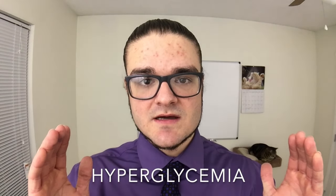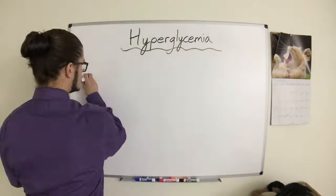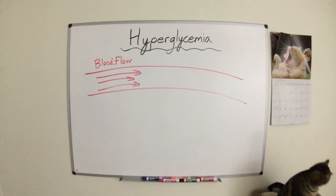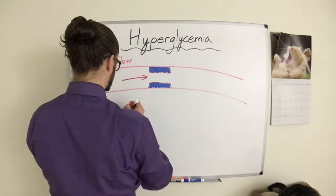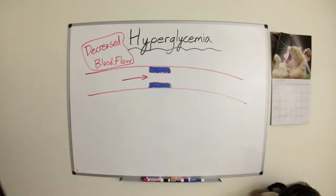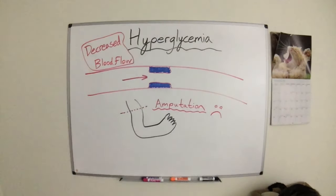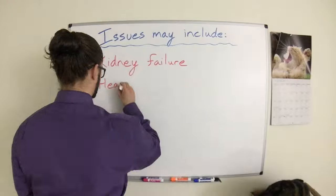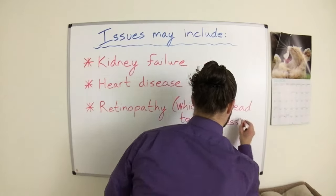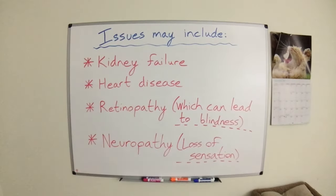Regardless of the type of diabetes, the damage always comes from having too much glucose in the blood, a condition known as hyperglycemia. Hyperglycemia can cause glucose to accumulate in the capillaries of the body, which can make them brittle and decrease blood flow to certain areas, which is why some people have to have their feet amputated. Other issues can include kidney failure, heart disease, retinopathy which can lead to blindness, and neuropathy, which is a lack of feeling.